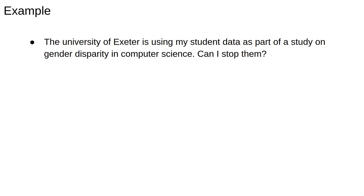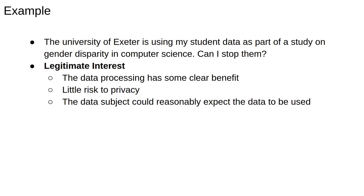Let's imagine that the University of Exeter is using my student data as part of a study on gender disparity in computer science. Can I stop them? Under GDPR, the provisions for data processing for things like marketing are stricter than for other purposes. For example, when processing data for statistics and scientific or historical research, like performing an academic study or doing journalism, there may be what's called a legitimate interest. This is a flexible definition that usually applies when data processing has some clear benefit to the public or the subject, there's little risk to their privacy, and the data subject could reasonably expect that their data would be used in this way. So something like statistics on gender disparity in computer science would likely fall in this category.